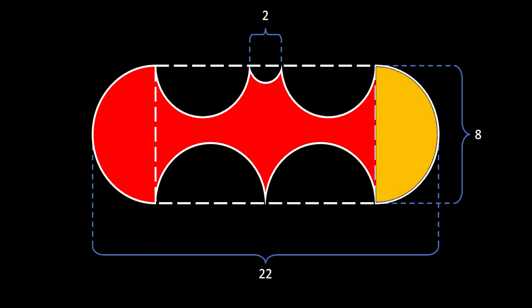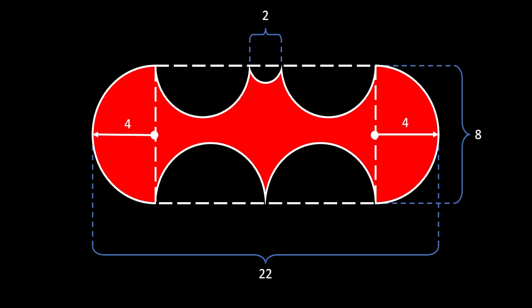Let's first take a look at the circle on the right, outside our rectangle. Since the overall height of the bat wing is equal to 8, that is also the diameter of this semicircle, so the radius must be equal to 4. The same applies for the semicircle on the left, since those two are identical. Since the overall length is 22 and these two circles have radius 4, the length of our rectangle must be 22 minus 2 times 4, which is 14.